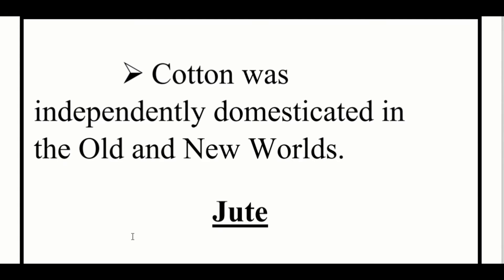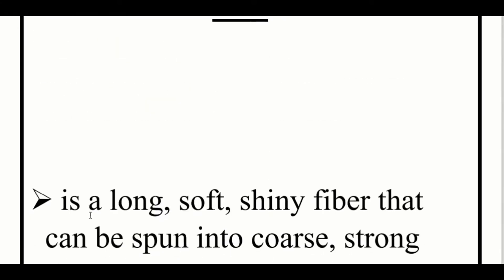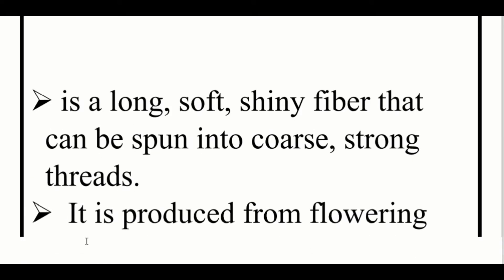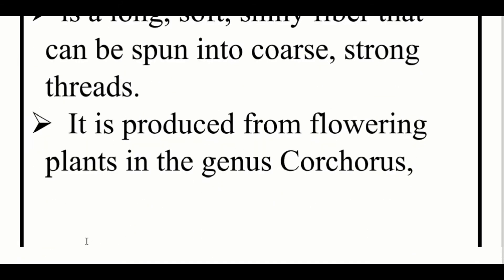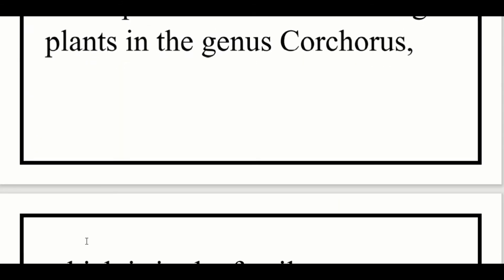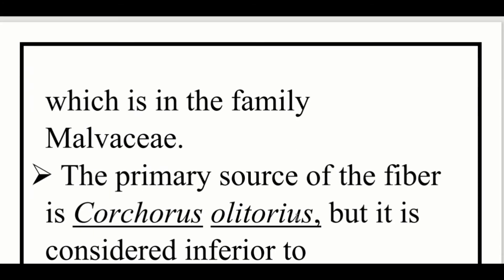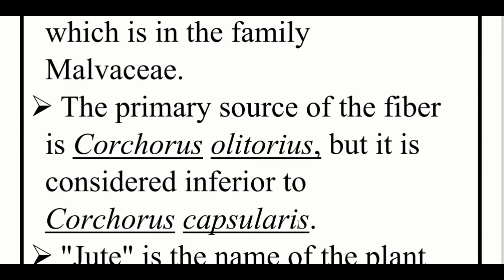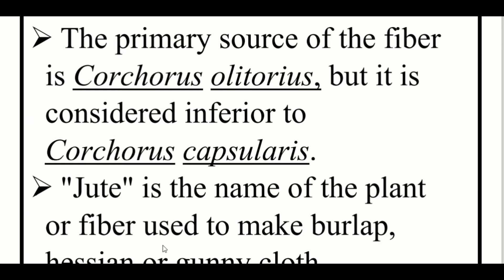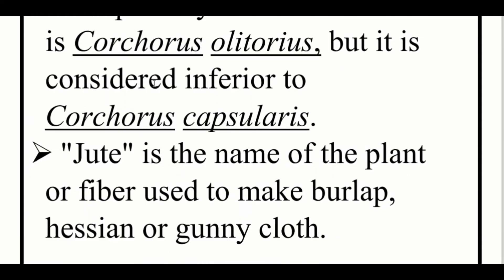The fiber yielding plant is jute. Jute is a long, soft, shiny fiber that can be spun into a coarse and strong thread. It is produced from the flowering plant in the genus Corchorus. Corchorus is a genus in the family Malvaceae. The primary source of the fiber is Corchorus olitorius, but it is considered inferior to Corchorus capsularis.